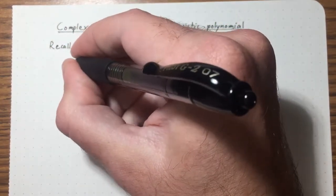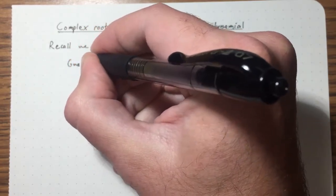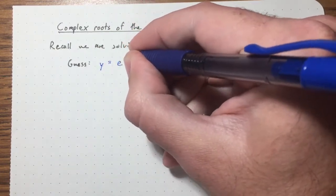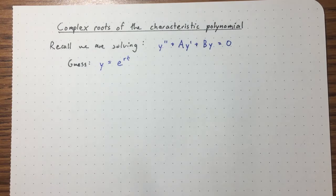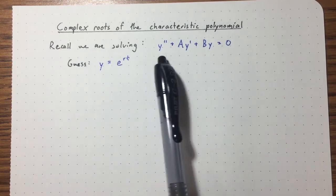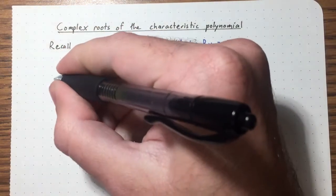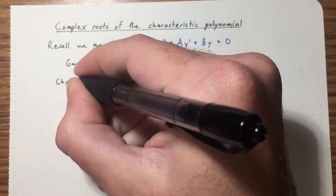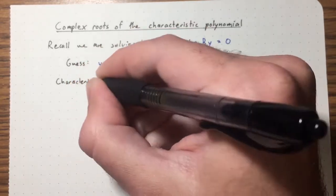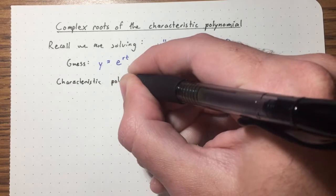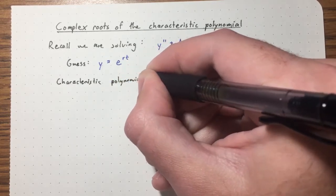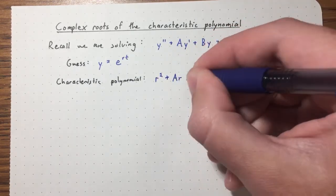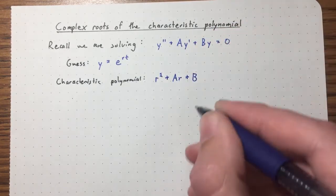The main idea, as we've seen, is to make a good guess for the solution, and our guess is going to be an exponential: e to the rt. We take the derivative and the second derivative, plug it in, and after canceling the e^(rt) factor we get the characteristic polynomial: r² + ar + b = 0.